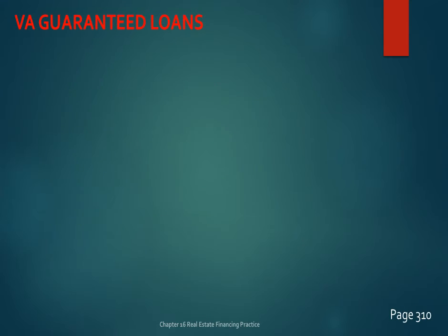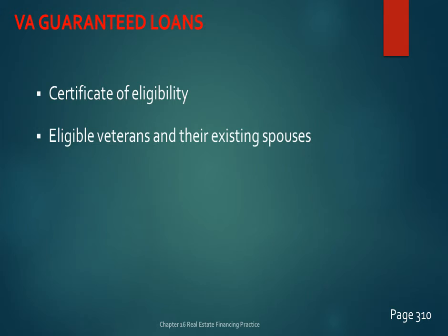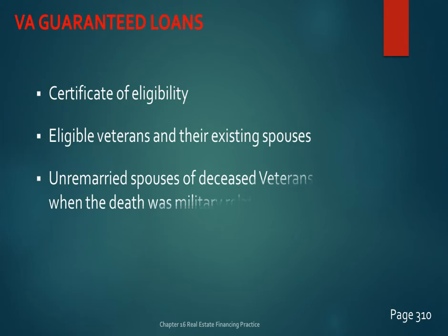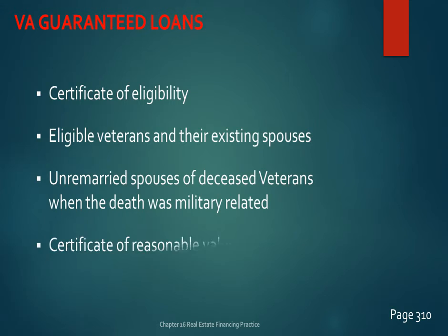VA loans are loans to veterans given by the Veterans Administration, and they're actually guaranteed — unlike FHA loans, which are insured. You're issued a certificate of eligibility. This applies not only to veterans but also to their non-married surviving spouses where the death was military-related. A CRV (Certificate of Reasonable Value) is issued to determine how much the VA will guarantee on a given loan.